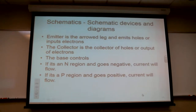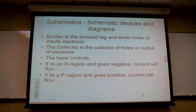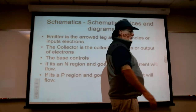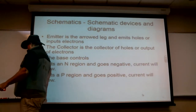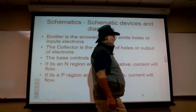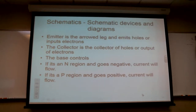In the transistor, the nomenclature is really wonky. They came up with the terms emitter and collector. The collector will collect holes or output electrons. If I look at a PNP device, I'm going to have a base controlling it in the middle region. The emitter will either send out holes or take in electrons.